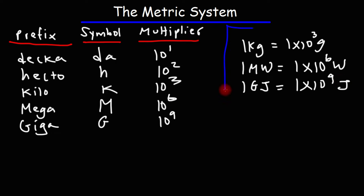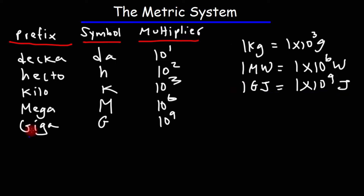What I have here are called conversion factors. Notice how I'm writing all of my conversion factors — this is going to be important when we're solving problems. You always want to attach a 1 to the prefix, and then the multiplier goes with the base unit, whether it's joules for energy, watts for power, or grams for mass. You always attach the multiplier to the base unit, and it makes it easy to write the conversion factors. Once you have them down, it's going to be easy to convert from one unit to another.